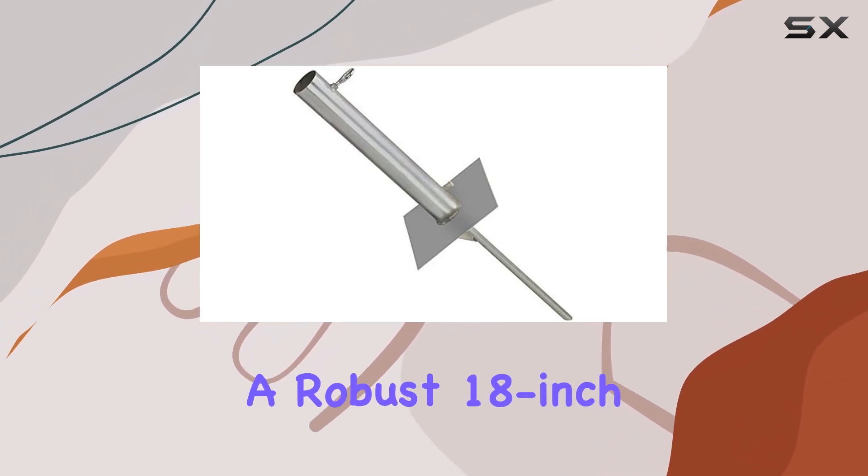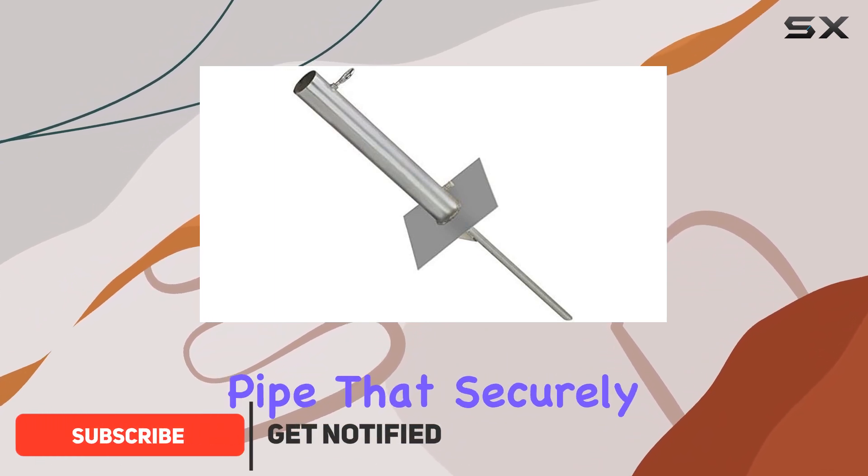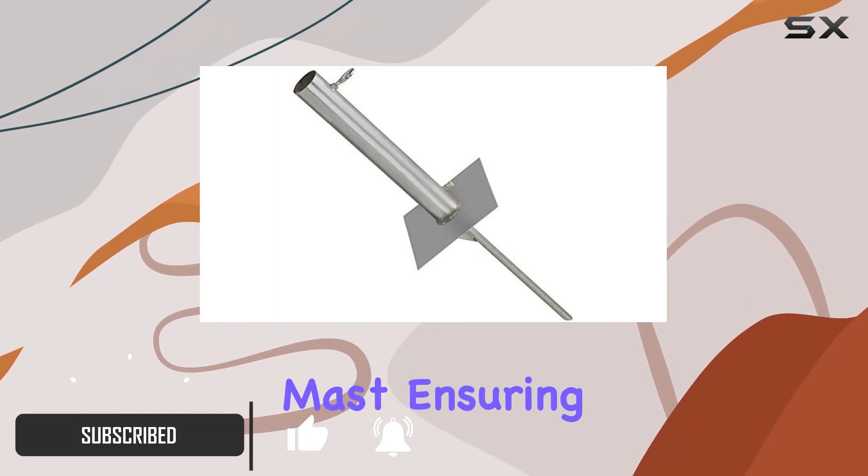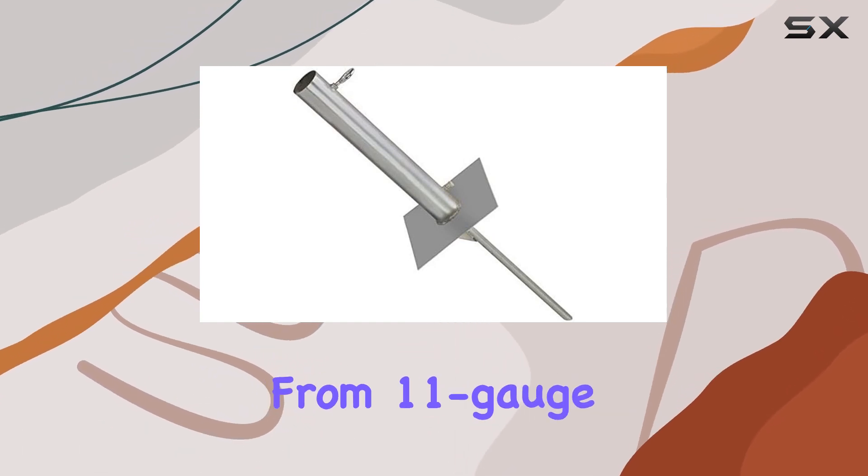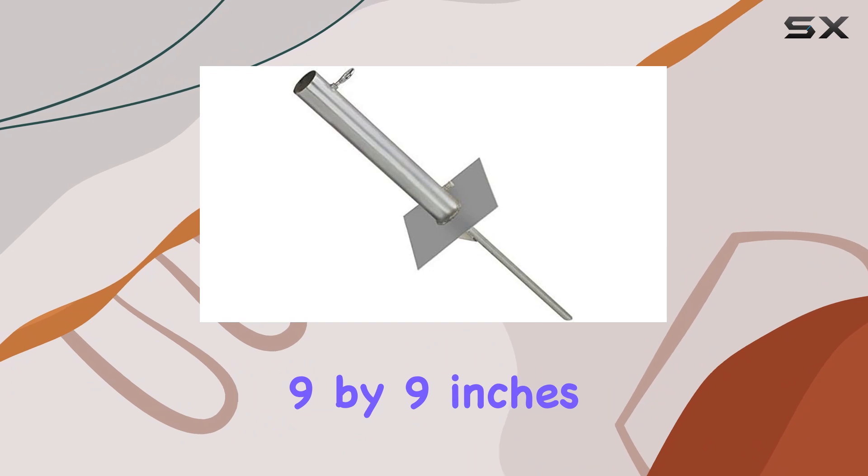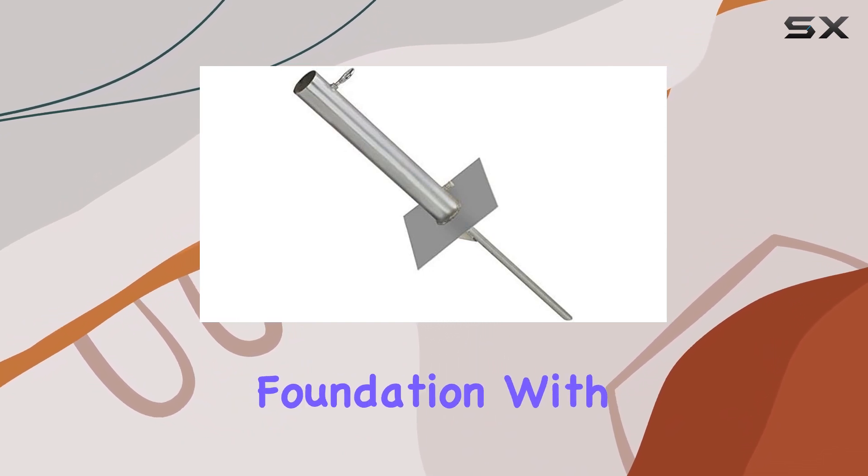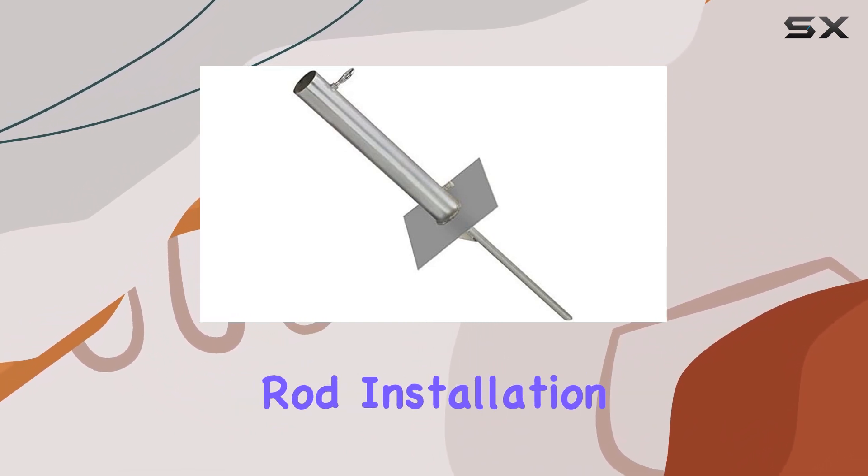This mount features a robust 18-inch welded guide pipe that securely accepts your mast, ensuring stability and reliability. The plate, crafted from 11-gauge steel measuring 9 by 9 inches, provides a sturdy foundation with an integrated 8 to 3, 4-inch welded rod.